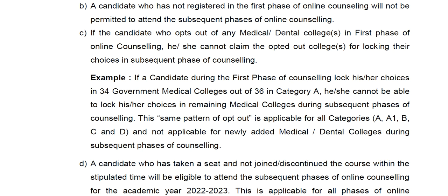The next round will proceed. The two colleges are in the choice filling, and the seat is also in choice. This is the opt-out rule. In the first round, the advisable condition applies. The categories are A, A1, B, C, D.